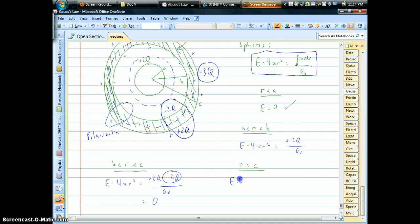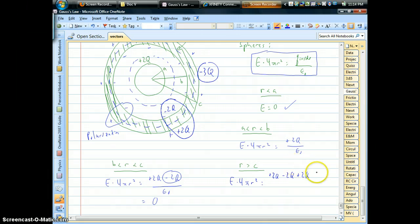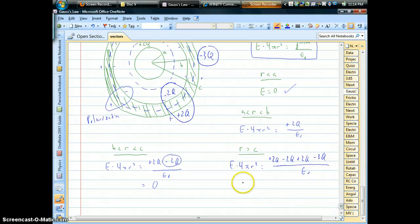So that means if we're outside the whole system, for example, Gauss's law would tell us, well, we have the plus 2Q from that hollow shell on the inside. You have the negative 2Q on the inner surface and a positive 2Q on the outer surface due to polarization. And then you have that net charge of negative 3Q. So there would be an electric field out there.